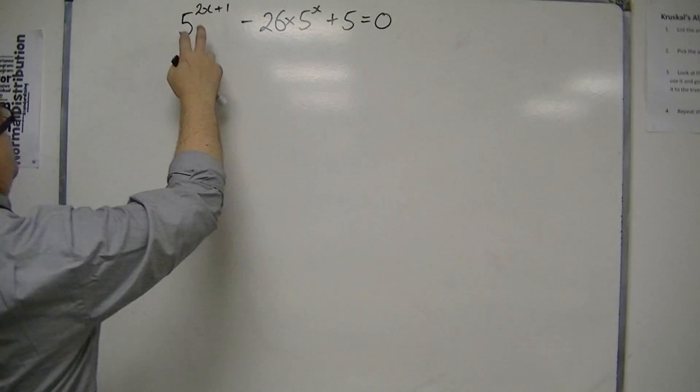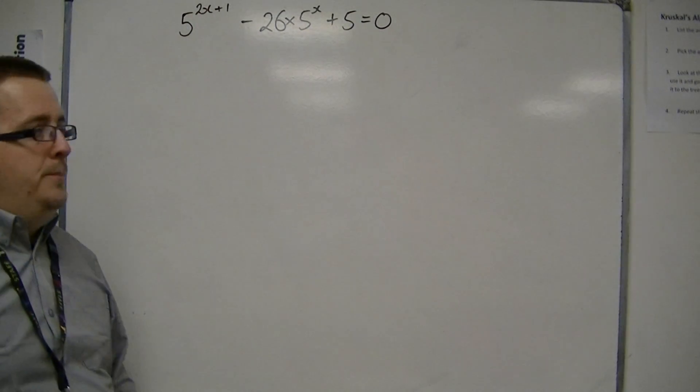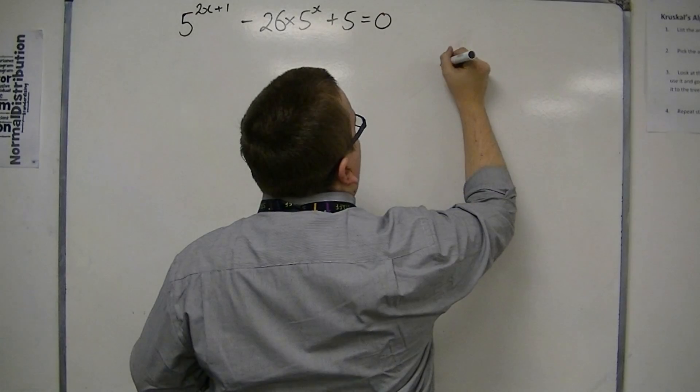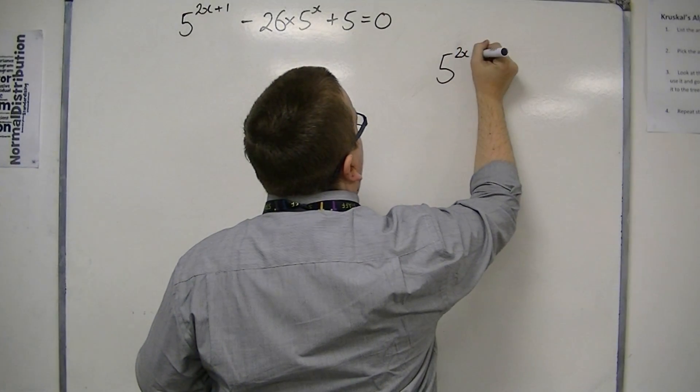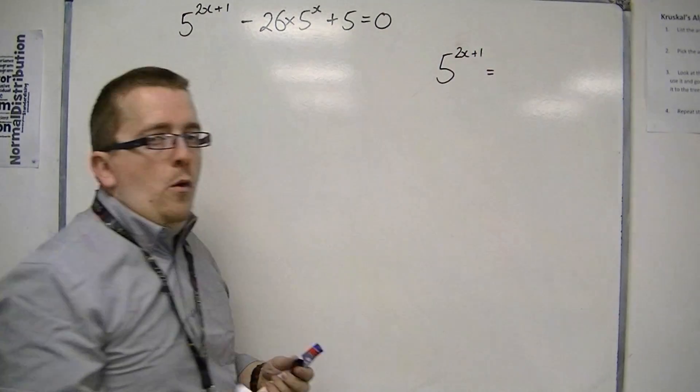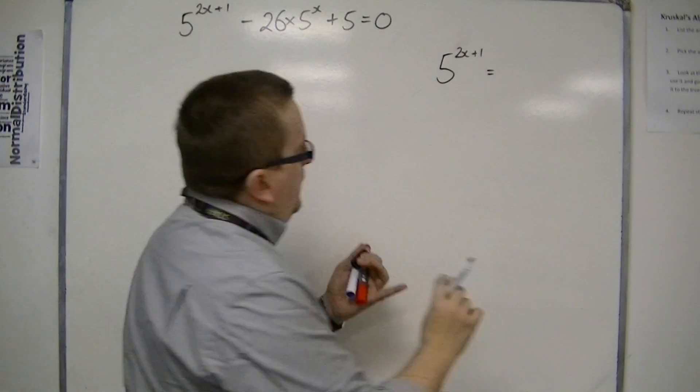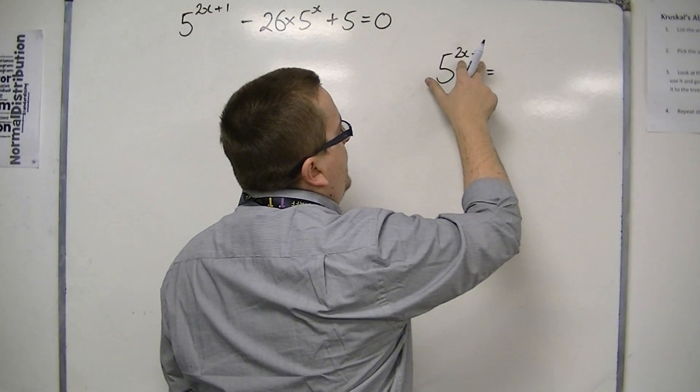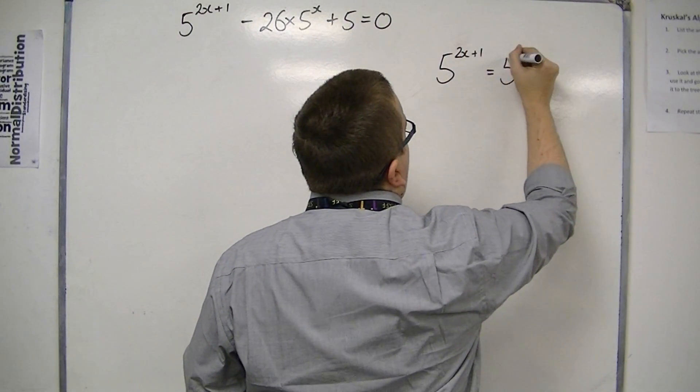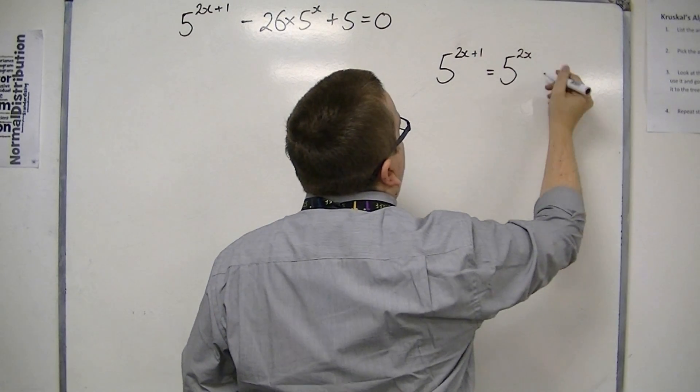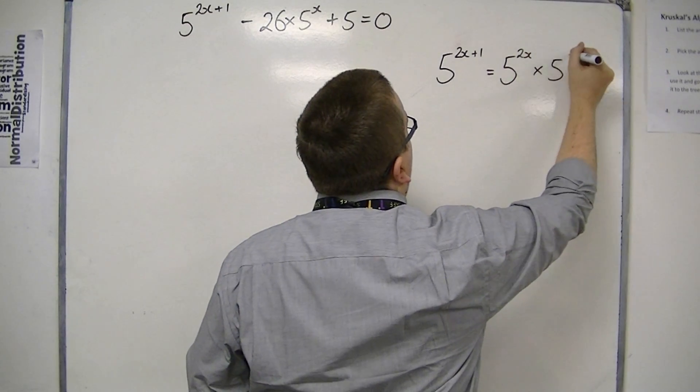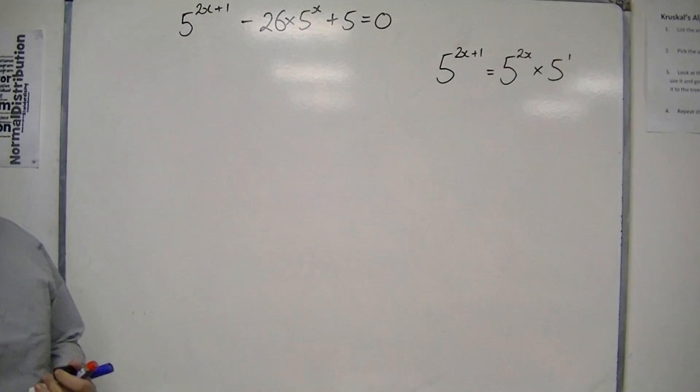So you've got to be confident with what that means. If I do it over here, we've got 5 to the 2x plus 1. Now what does that mean? That means, because I've got an addition of indices, that it's actually the same as multiplying 5 to the 2x by 5 to the 1.